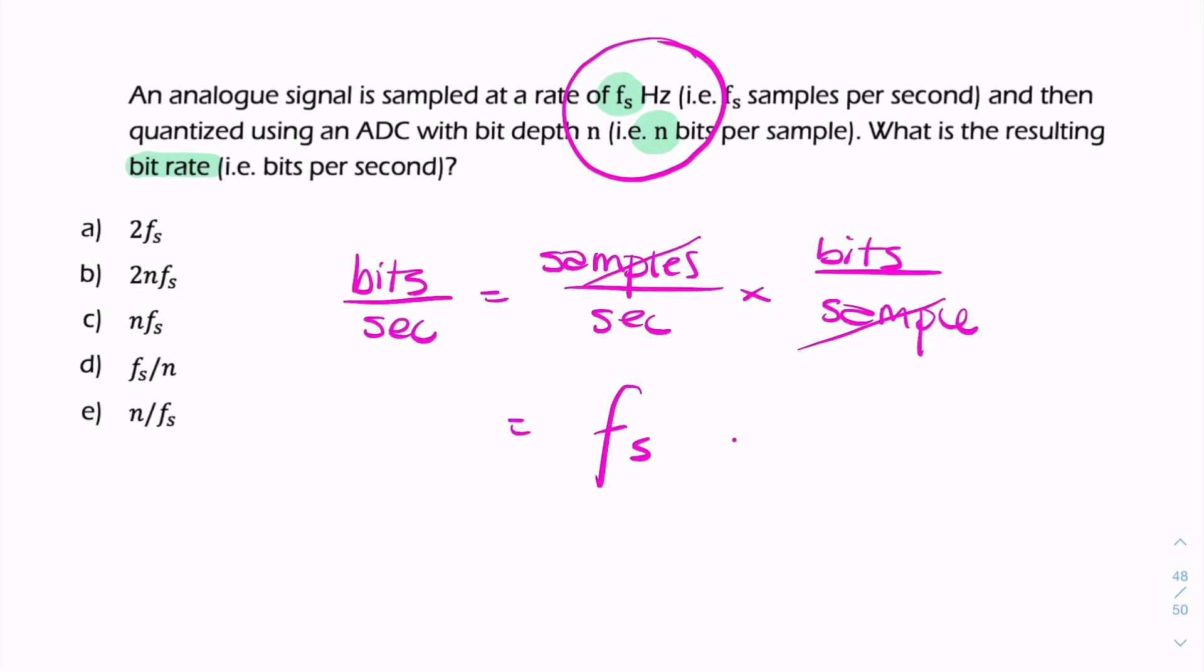So it's the product of the two. So increasing either n or the sample rate fs will increase the resulting bit rate. So the bit rate is directly proportional to both. So if you double the number of bits per sample or if you double the sample rate, you'll be doubling the bit rate.